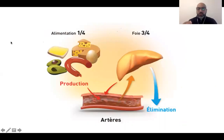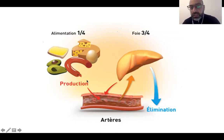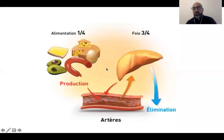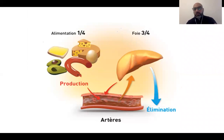J'insiste sur le cholestérol car c'est un élément primordial : c'est le cholestérol qui va pénétrer dans nos artères. D'où vient-il ? Dans la majorité des cas, il est fabriqué au niveau du foie. Un quart à un tiers vient de l'alimentation riche en graisses — fromages, huile, etc. — mais la majorité est fabriquée par le foie, notamment chez le sujet sédentaire.